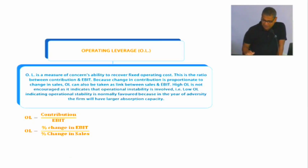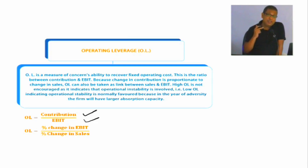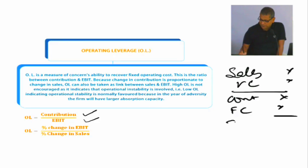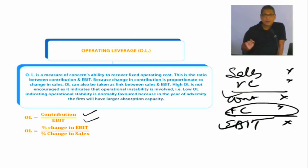Operating leverage क्या होता है कि operating leverage is contribution divided by EBIT. अगर आपका contribution और EBIT के बीच में item देखोगे तो that is fixed cost. अगर आप income statement बनाते हो, so the sales minus variable cost is contribution and then contribution minus fixed cost is EBIT. तो यह जो contribution divided by EBIT है, that is called operating leverage.